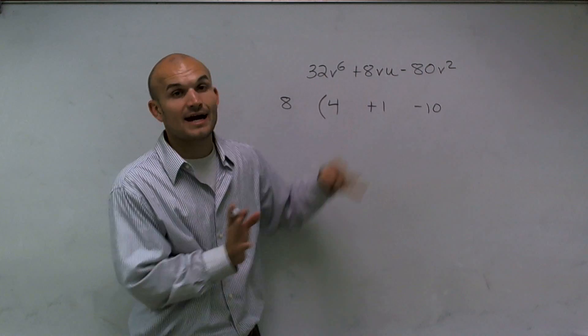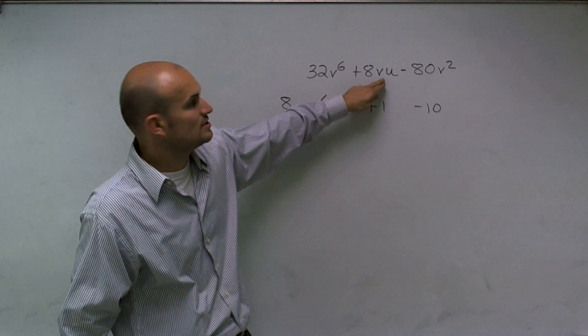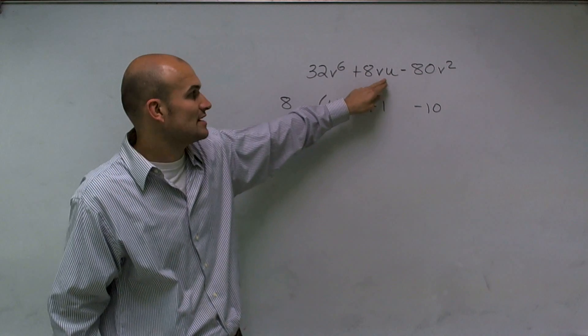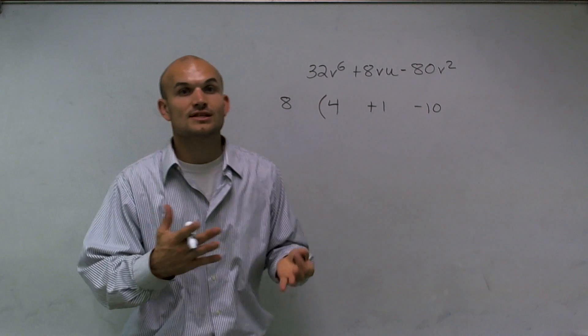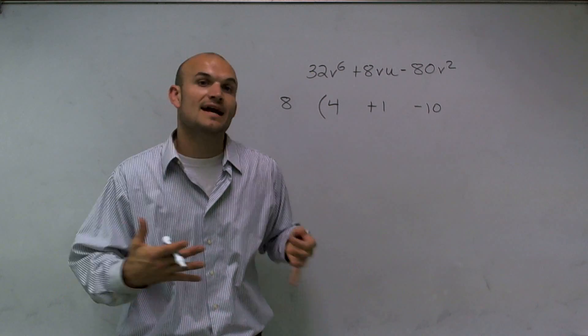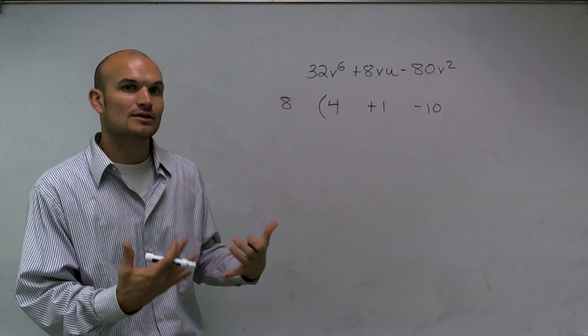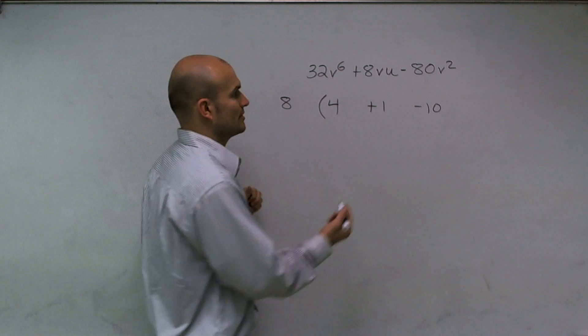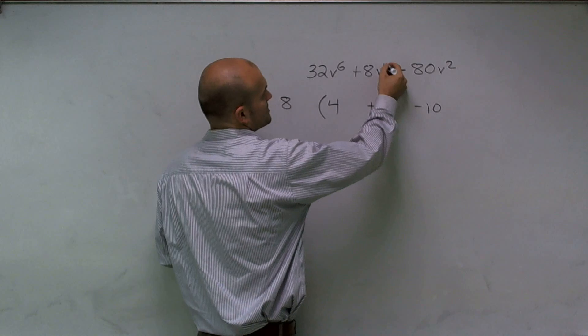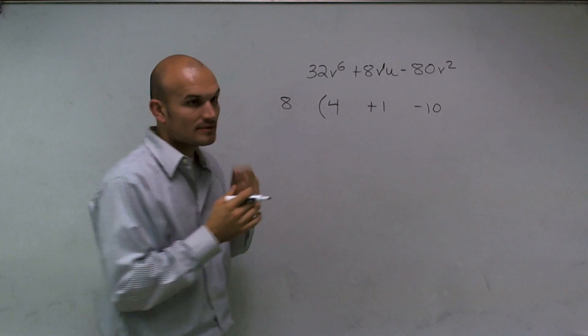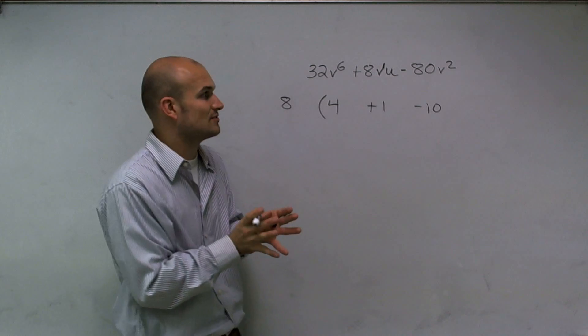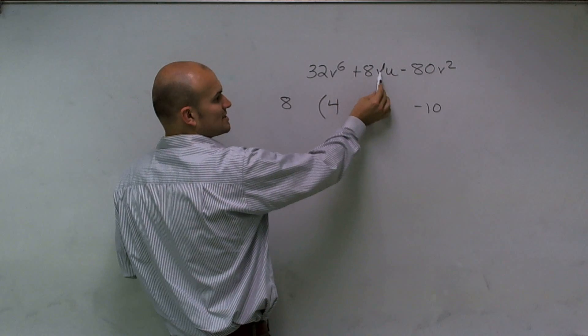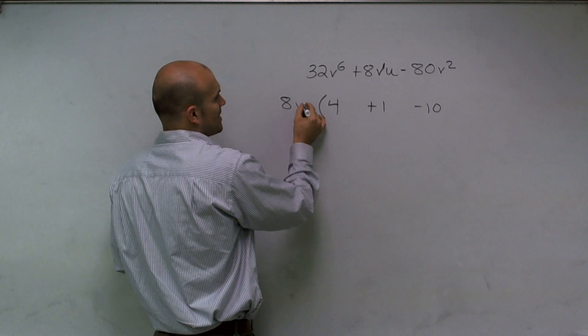This is the only term that has a u. So I cannot factor a u out of the other two terms. So I'm going to look at a v, and I need to determine what is the largest term of v that I can factor out. And again, we're going to look at what is the smallest exponent. Well, what I notice is v is just also v to the first. So that's going to be the smallest number I can factor out out of these terms.